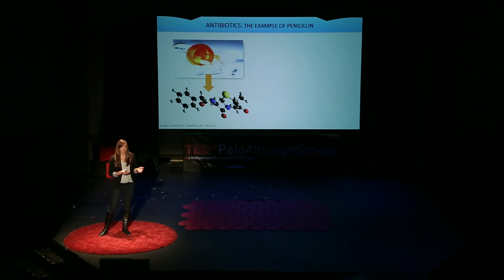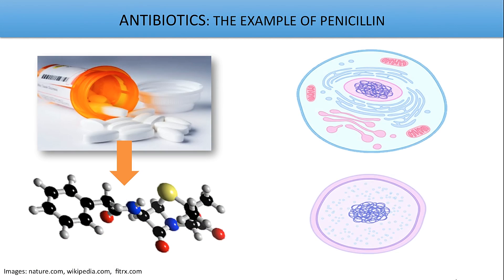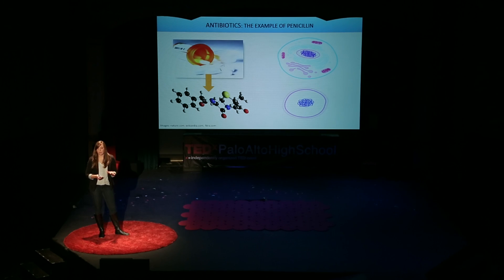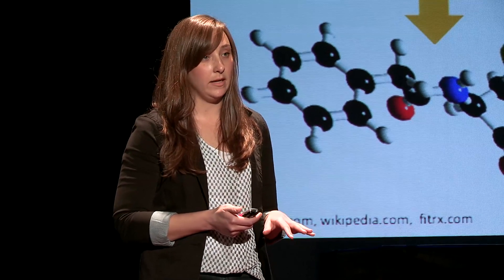When we have this bacterial infection, we have all these different bacterial cells mixed in with our own cells. Here are some schematics of what those cells look like. Our cells are on the top and the bacterial cells on the bottom — you can see that they look fairly different. Now what's important in the case of penicillin is that the cell walls of each type are made up of different materials.